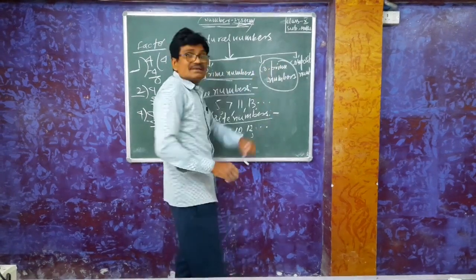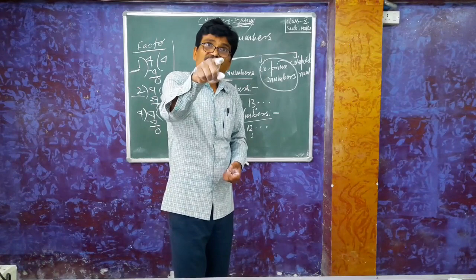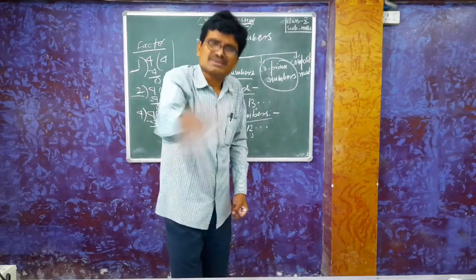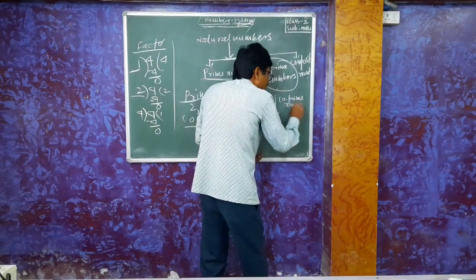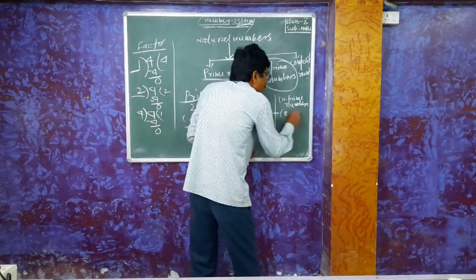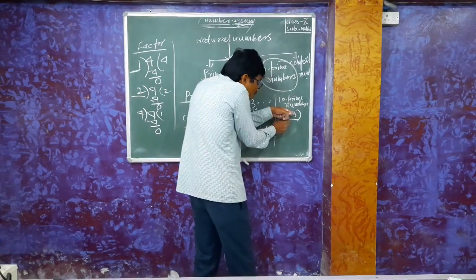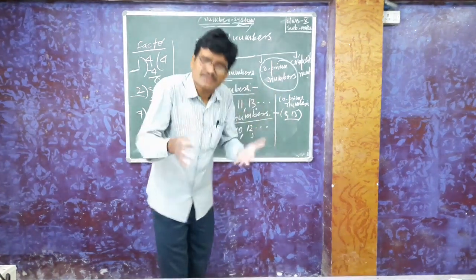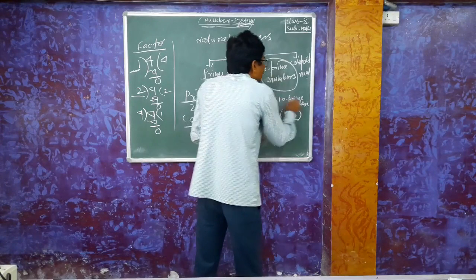Lastly, we discuss co-prime numbers. A set of two natural numbers which have only one common factor is called a co-prime number. For example, 8 and 15 — they have only one common factor, so the pair of these two natural numbers is known as co-prime numbers.